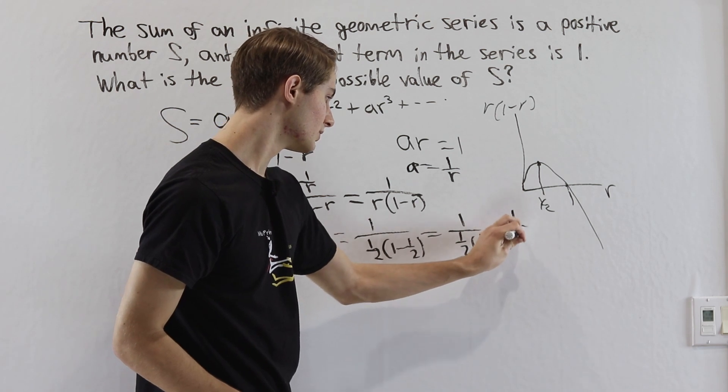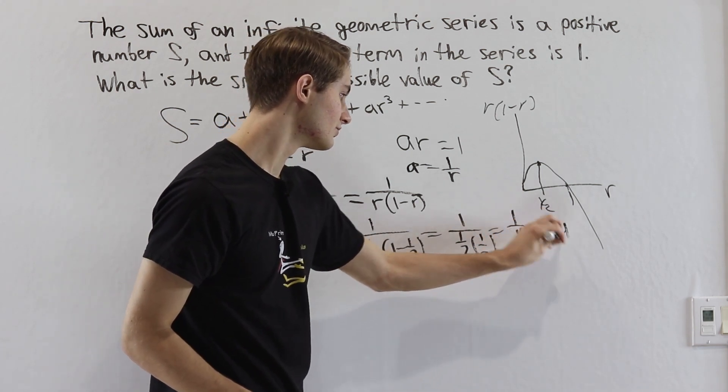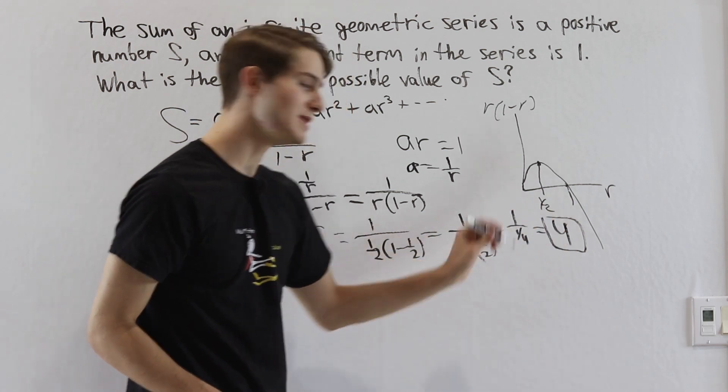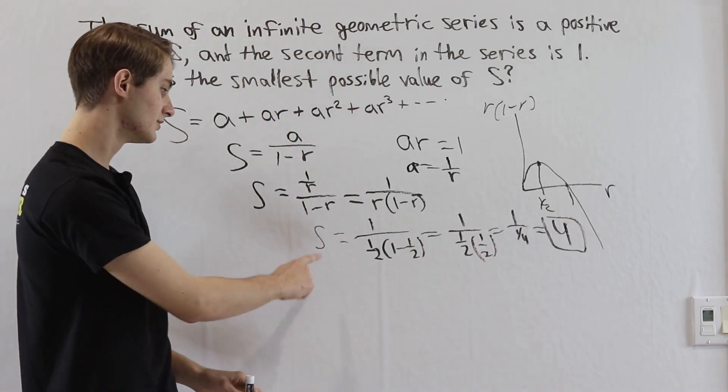Therefore we have 1 over 1 fourth, which equals 4. So 4 is going to be the minimum possible value for our s.